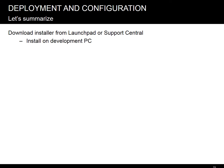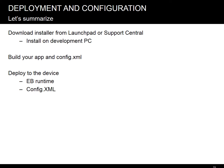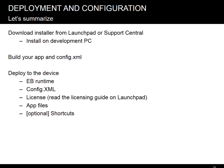Okay, let's summarize. To start working with EB, you need to download it from Launchpad or Support Central and install it on your PC. Then you build your app and config.xml. Then you deploy it to the device: first the EB runtime, then config.xml, then the license — read the licensing guide for details — then the app files, and optionally shortcuts. All this can be either done manually or scripted via MDM or simple batch files utilizing ActiveSync or ADB.